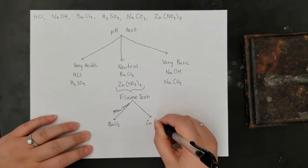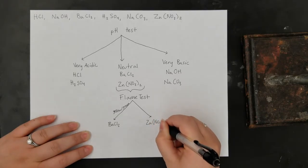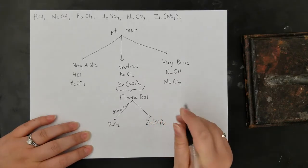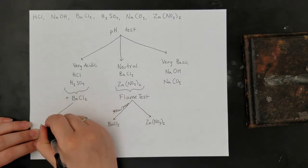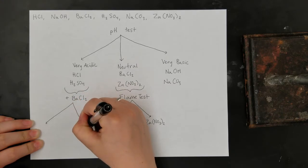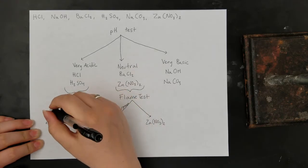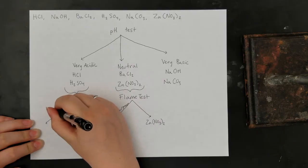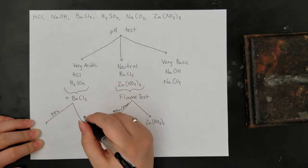At this point, we've identified two of our six unknown solutions. The remaining four are still in groups that need to be narrowed down. Since we've identified barium chloride, we can use it as a reactant for further testing of our unknowns. We know that if we react barium chloride with hydrochloric acid, nothing's going to happen.